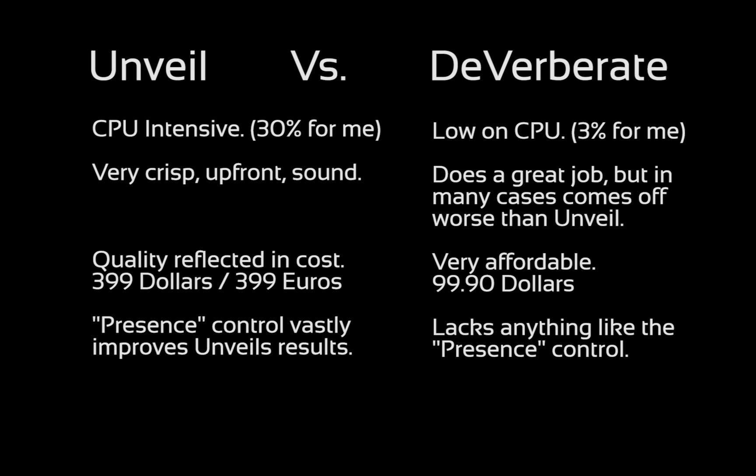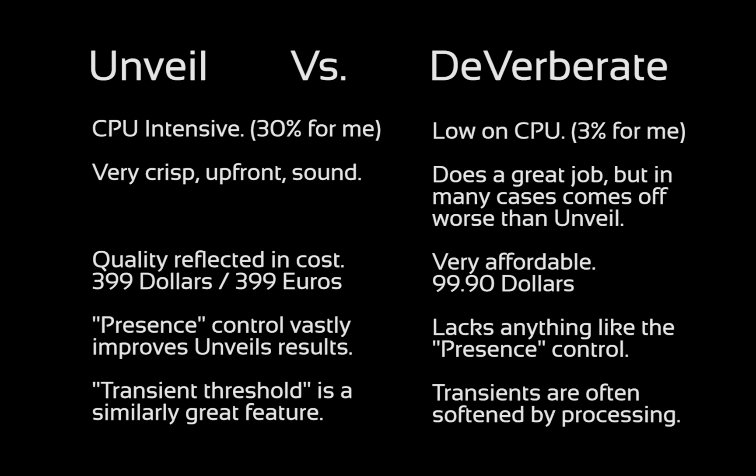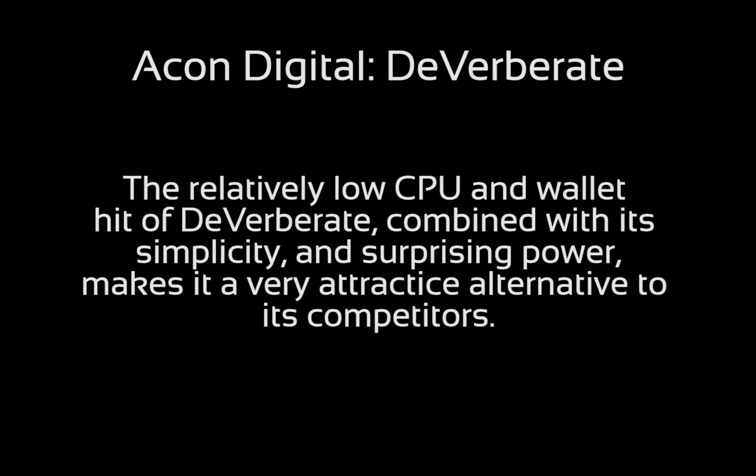Another feature advantage which Unveil has over Deverberate is that the transient threshold allows Unveil to win in basically any situation where you've got transients that matter, especially on any kind of percussive instruments. The transient threshold excludes transients from the processing, which means that no sound is ever taken away from the transients in Unveil. However, because Deverberate's implementation of transient protection isn't user configurable, transients can become noticeably softened by the processing.